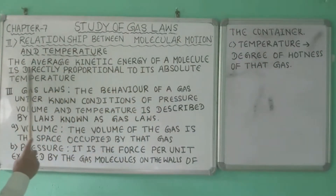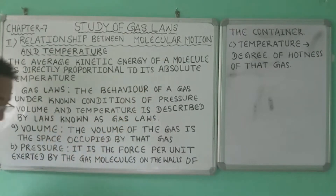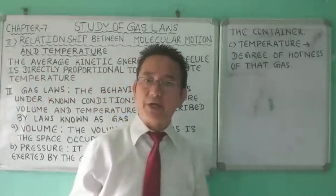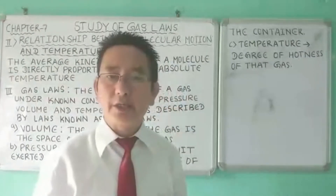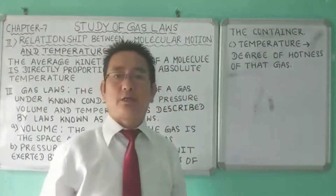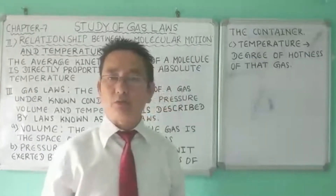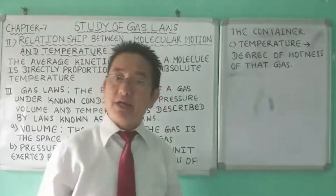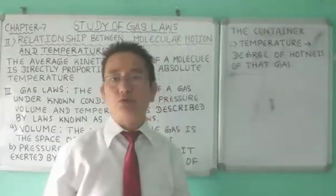The average kinetic energy of a molecule is directly proportional to its absolute temperature. This means that as the temperature increases, the molecular motion also increases, and when the temperature decreases, the molecular motion also decreases.